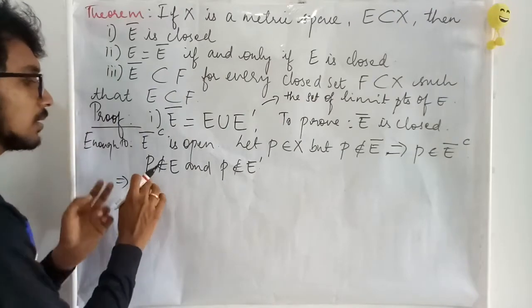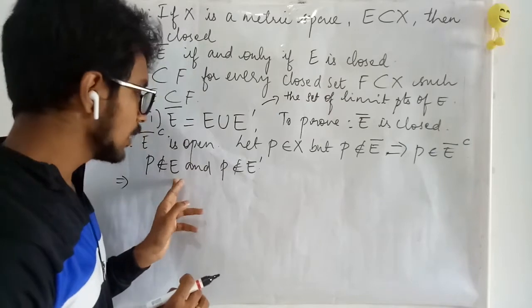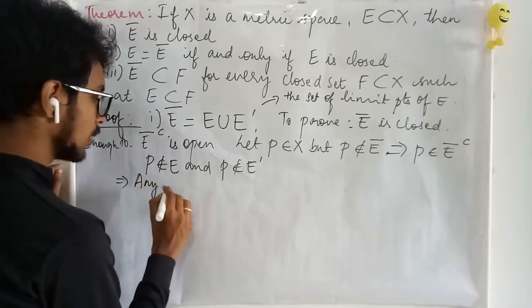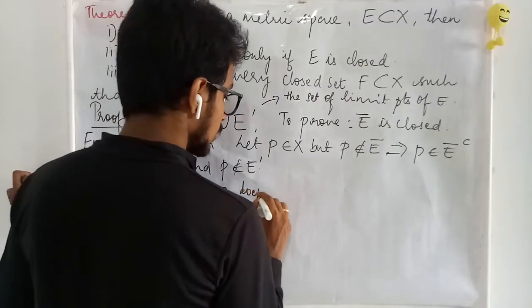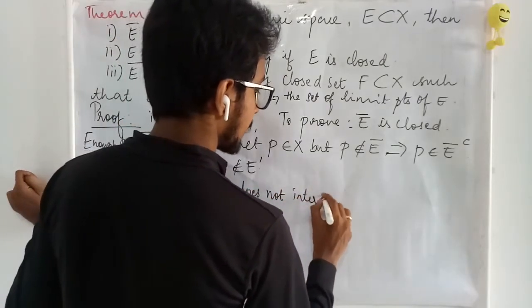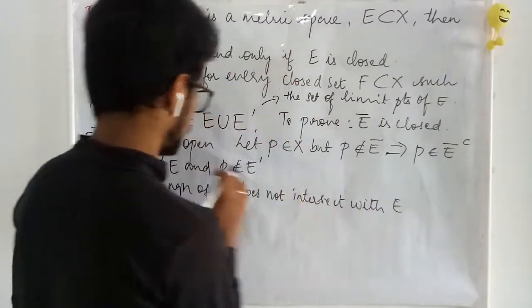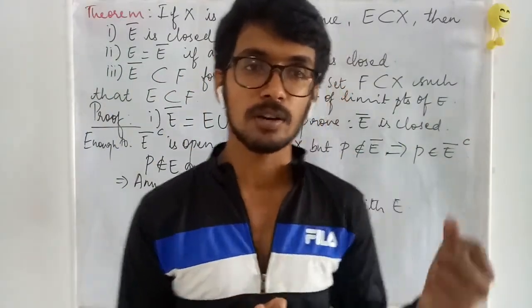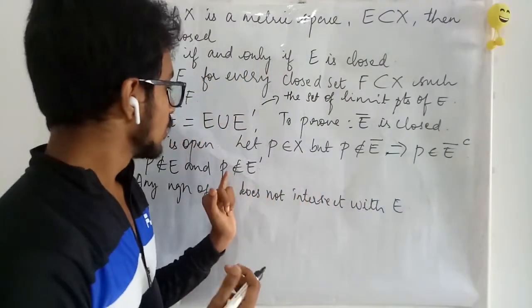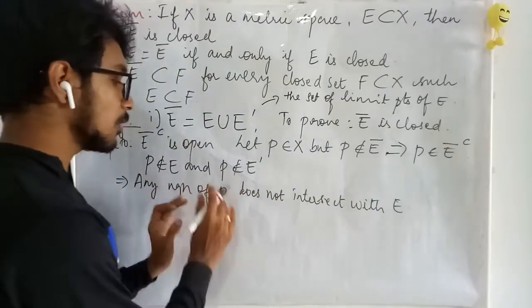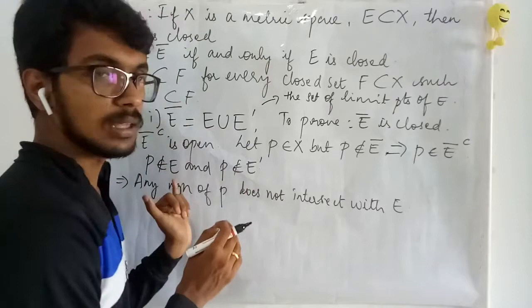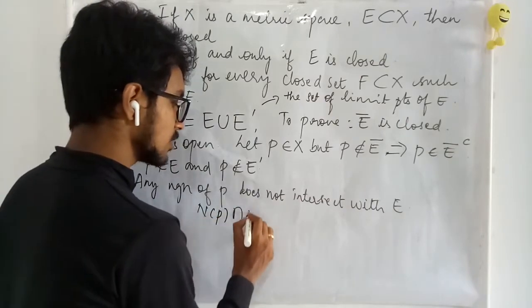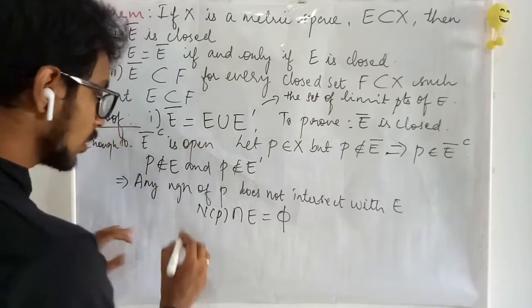So P is not a member of E and P is not a limit point of E. Since P is not a limit point of E, any neighborhood of P does not intersect E — because if it were a limit point, any neighborhood of P would contain at least one point of E. Therefore N(P) ∩ E is empty.